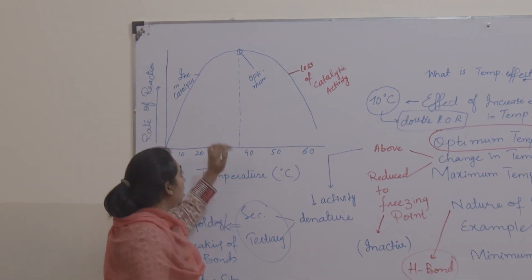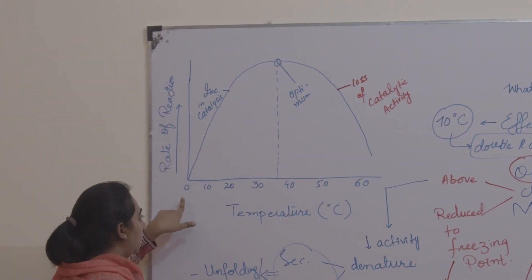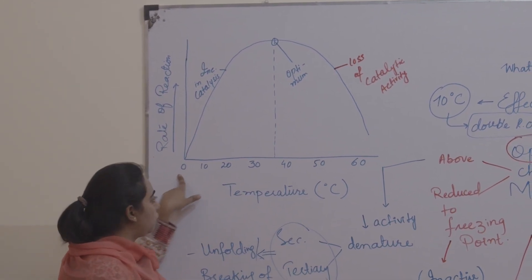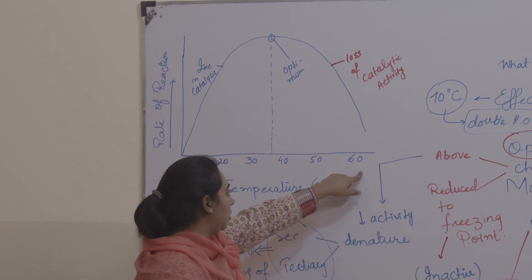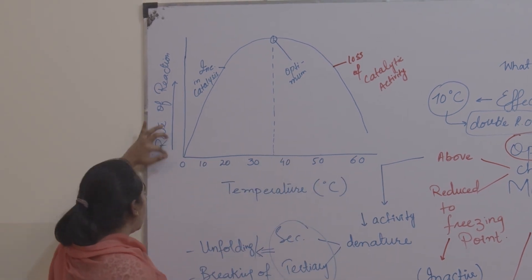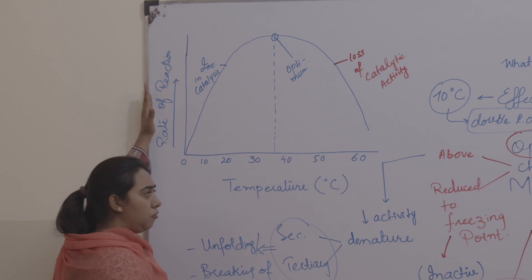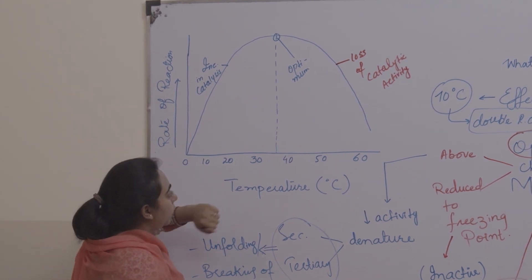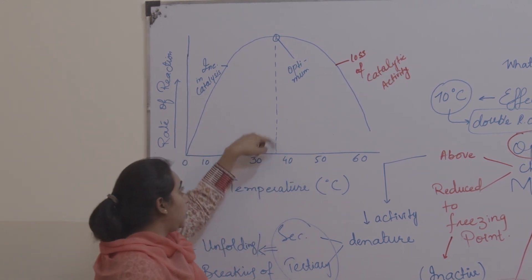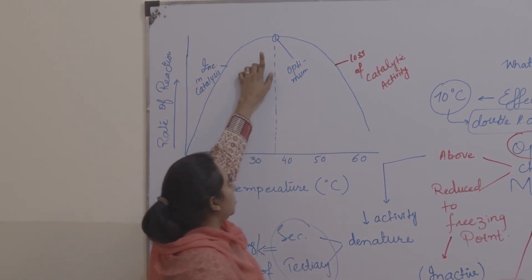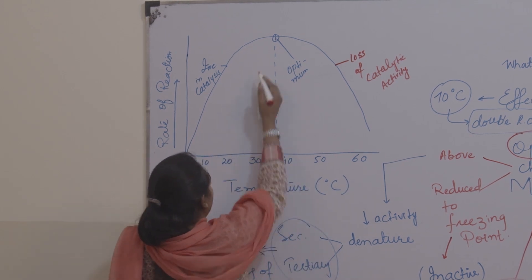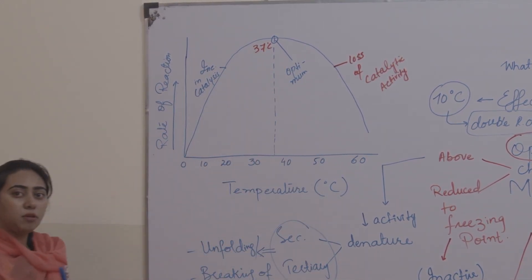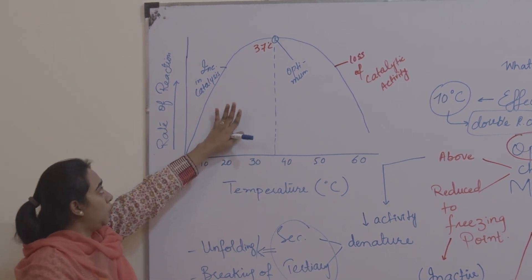Have a look at this graph — I believe it is figure 3.6a in your book. On the x-axis I have shown temperature from 0 to 60, with reference to the human body. On the y-axis I have shown rate of reaction denoted by V as in your book. The dotted line in the center is approximately at 37 — that is the optimum — and you can see that the enzyme is showing its maximum activity there.